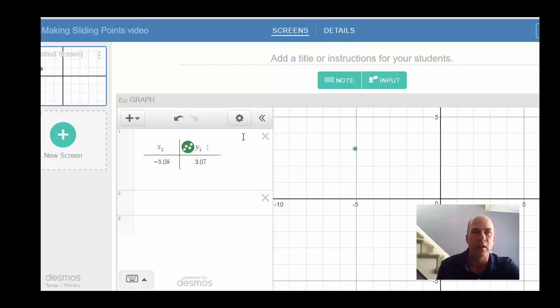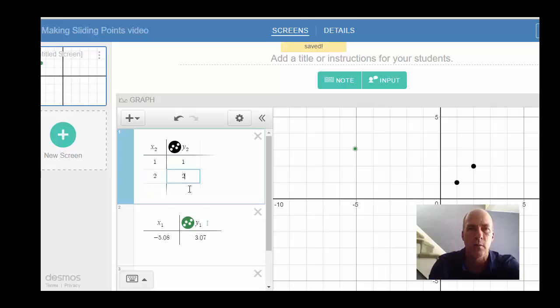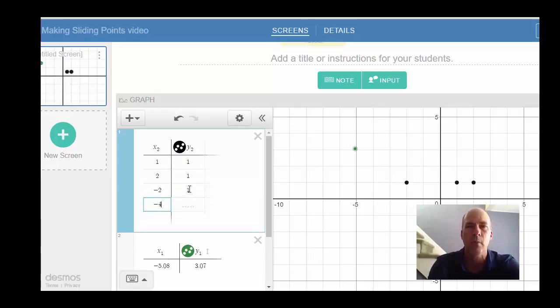So what if I wanted to make a series of points? Let's make a new series here by making a new table. And I do want a group of points here. Let's say I wanted one at 1, 1, maybe one at 2, 1, maybe negative 2, 1, negative 4, 1. So I'm just going to create five points here, negative 5, 1.